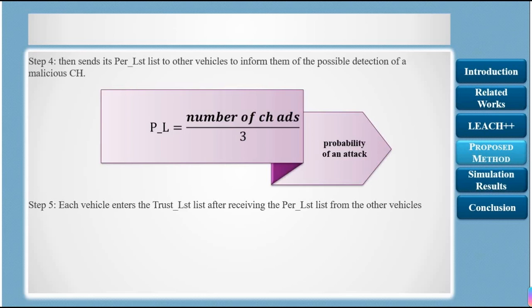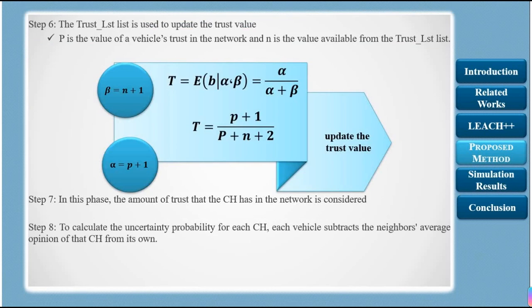Step 4: Each vehicle sends its personal list to other vehicles to inform them of possible malicious CH detection. All vehicles on the network share their lists after identifying a suspect. Step 5: Each vehicle builds a trust list by adding CH identifiers from received personal lists and neighbors' lists; if the CH ID already exists, it increments the status value. Step 6: The trust value for the next round is updated using the beta method, where P is the vehicle trust value and N is the value from the trust list.